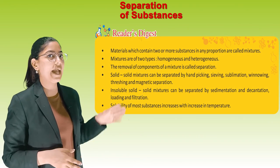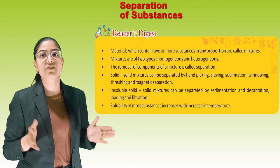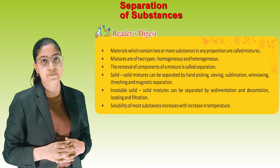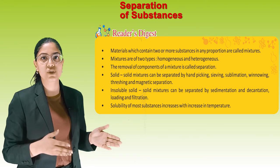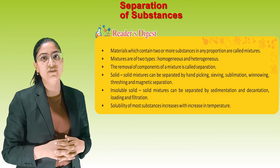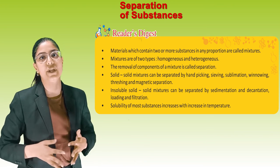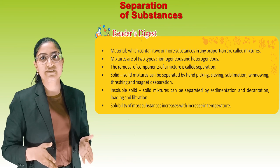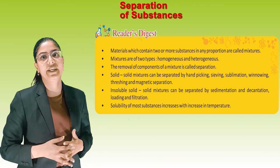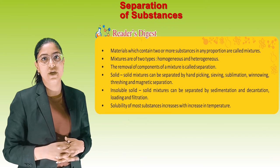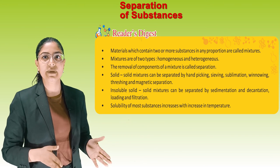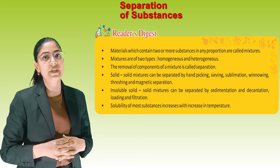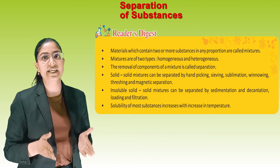Quick Revision: Materials which contain two or more substances in any proportion are called mixtures. Mixtures are of two types: homogeneous and heterogeneous. The removal of components of a mixture is called separation. Solid-solid mixtures can be separated by hand picking, sieving, sublimation, winnowing, threshing, and magnetic separation. Insoluble solid-liquid mixtures can be separated by sedimentation and decantation, loading, and filtration. Solubility of most substances increases with increase in temperature.